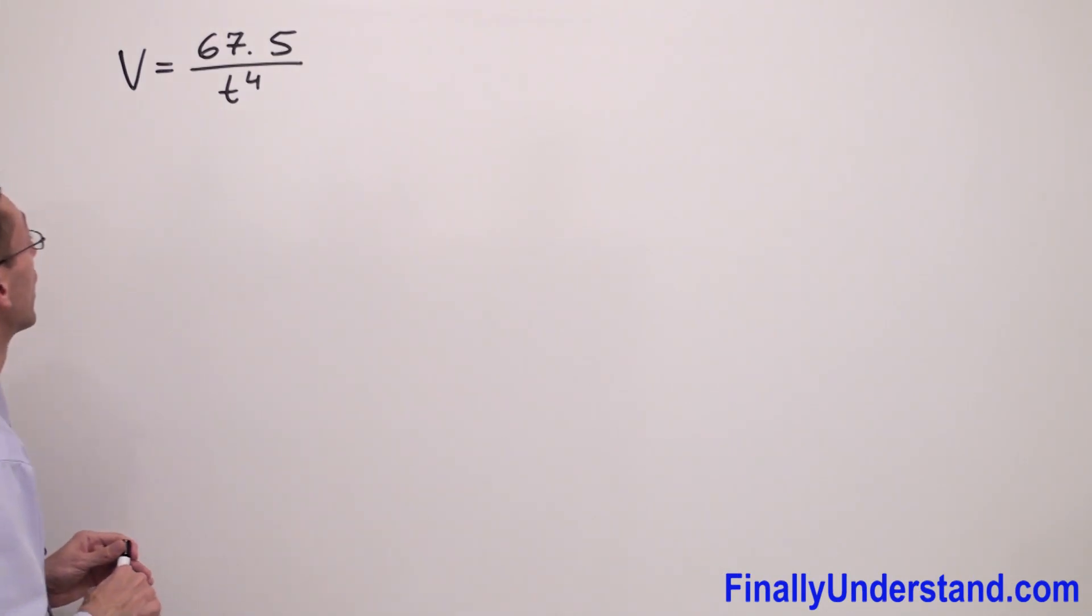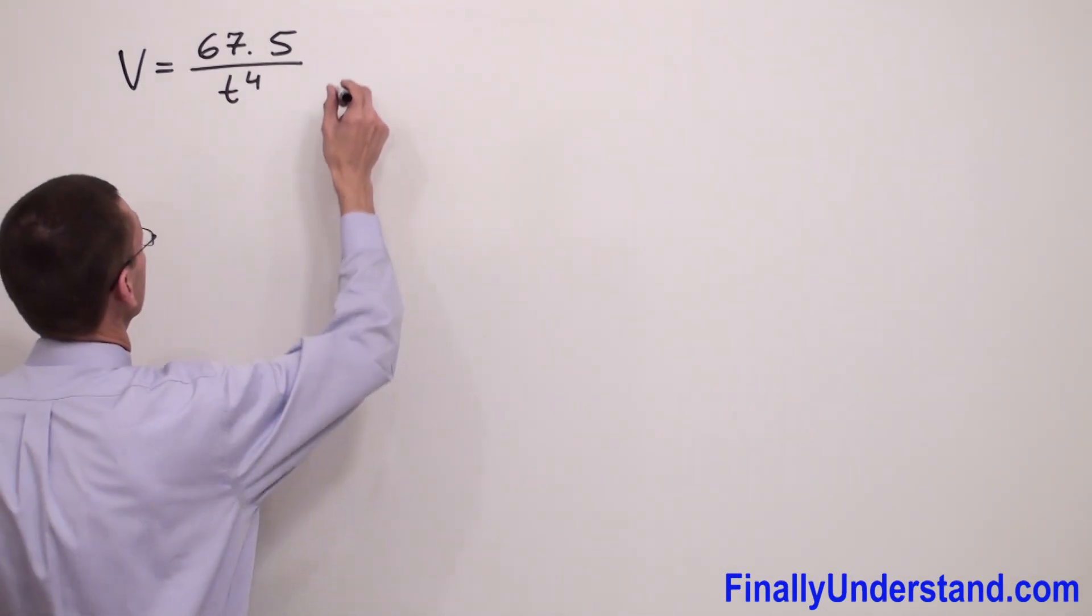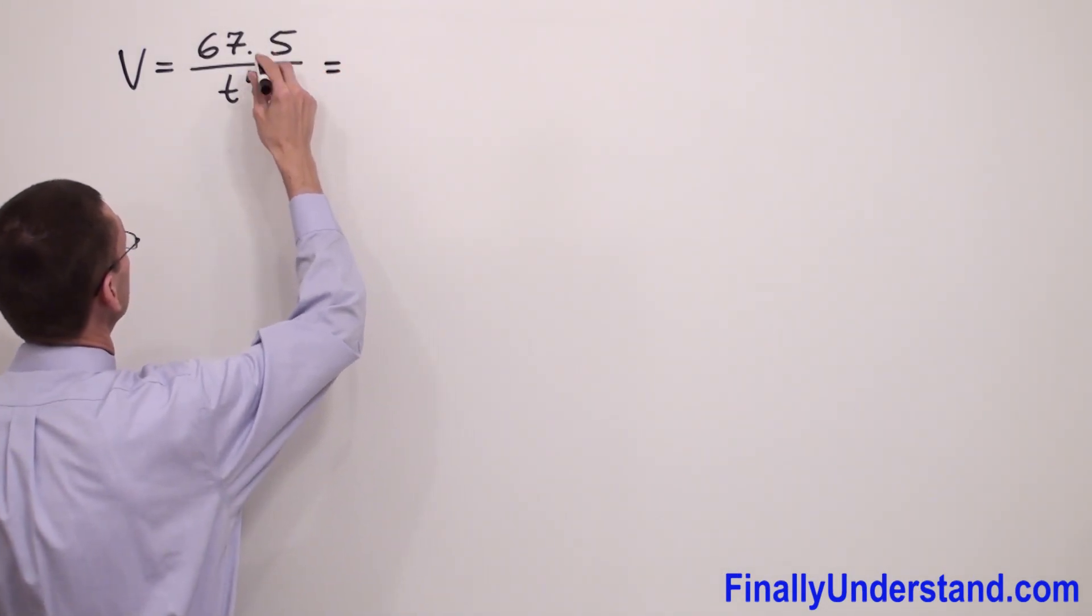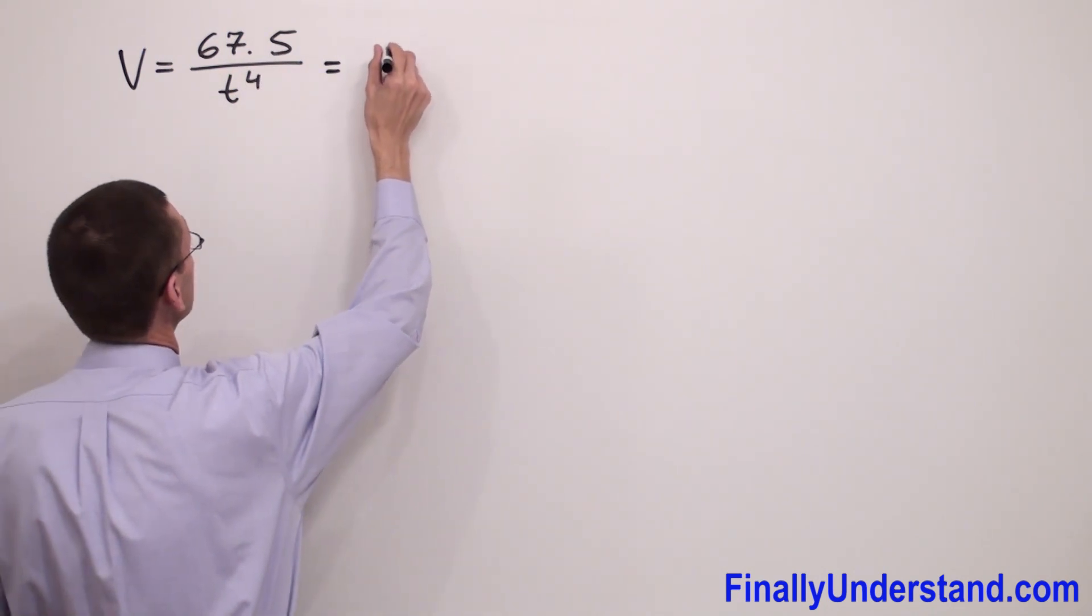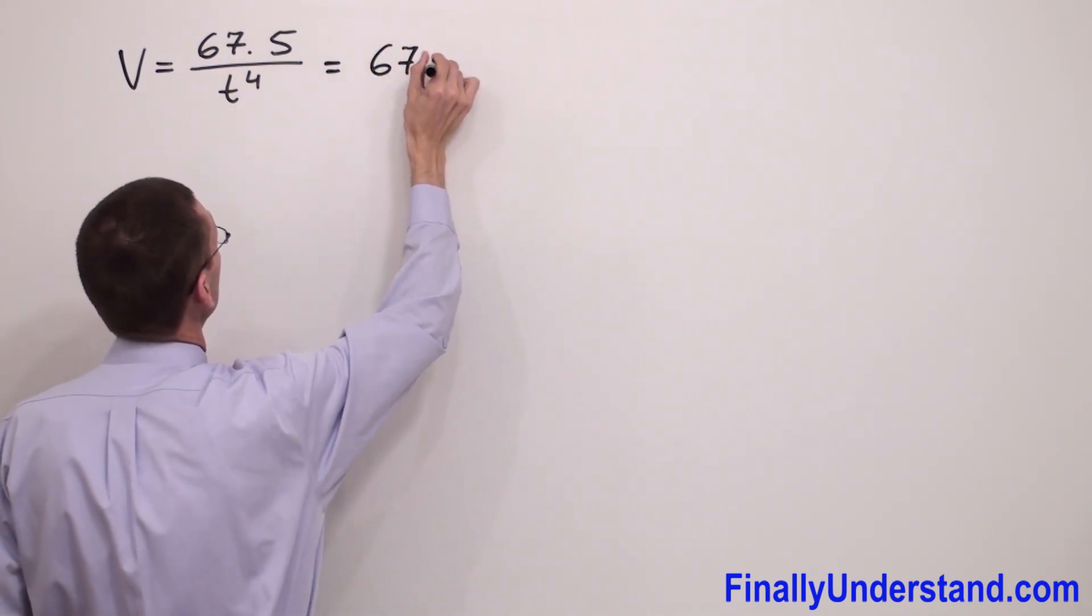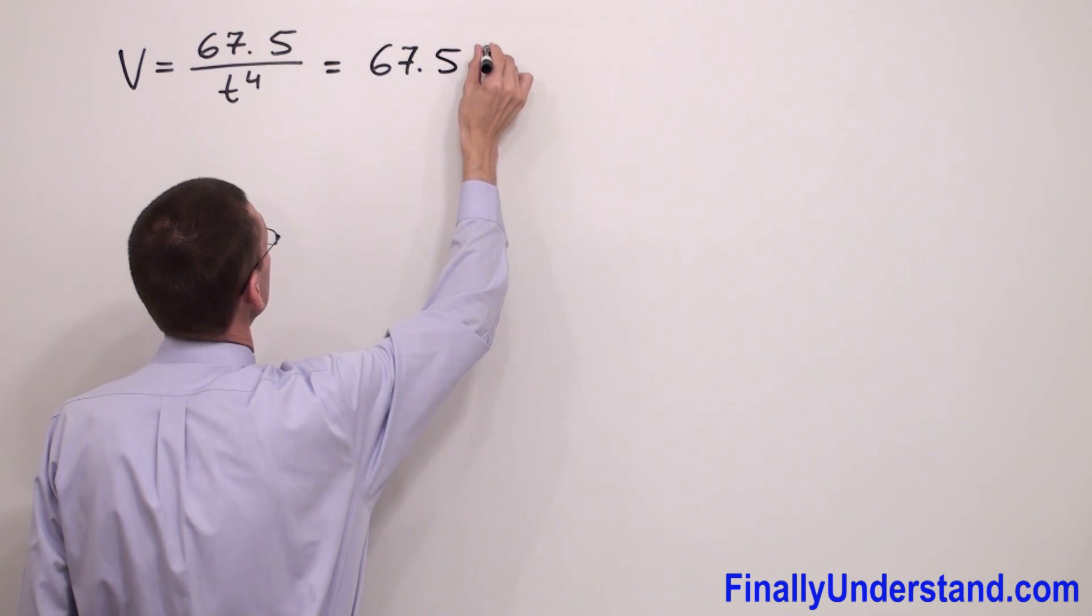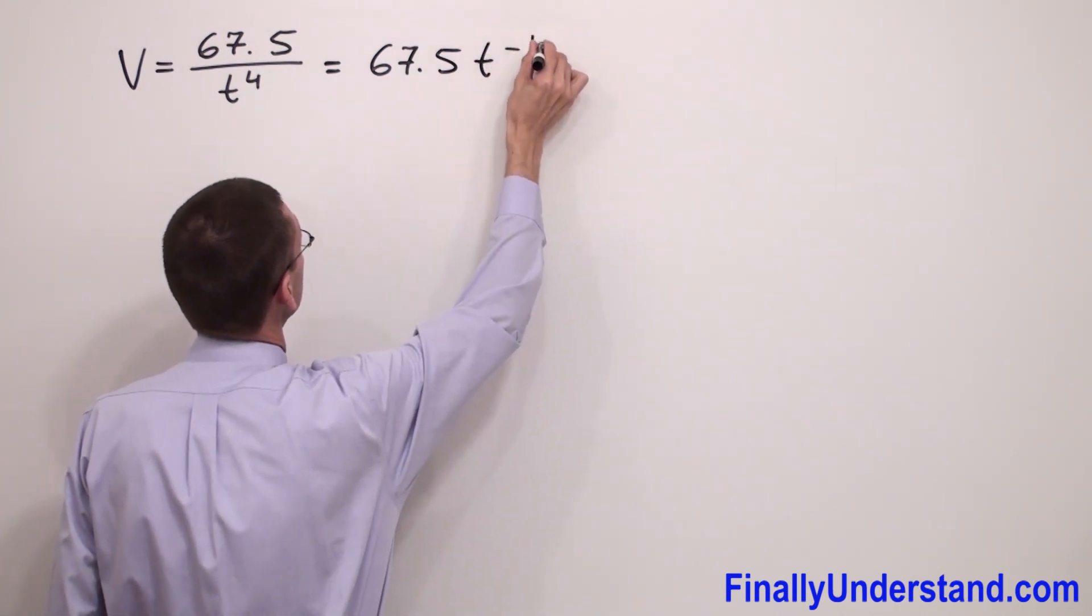We have another example on the board. Again, we have to rewrite this function a little bit. So what I'm going to do is convert division to multiplication. So I have 67.5 times t to the negative 4.